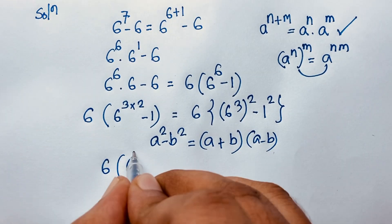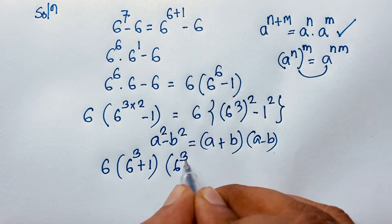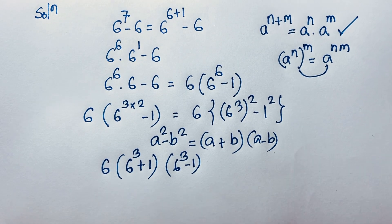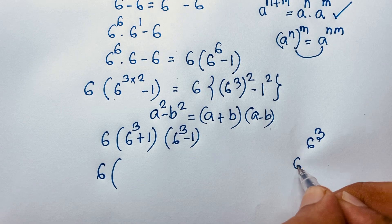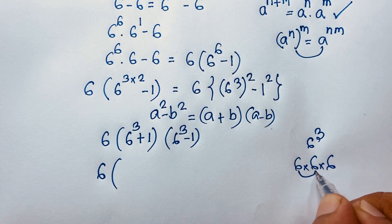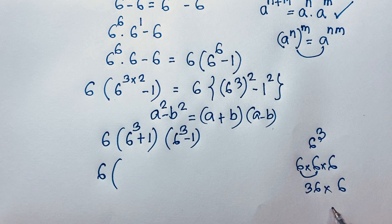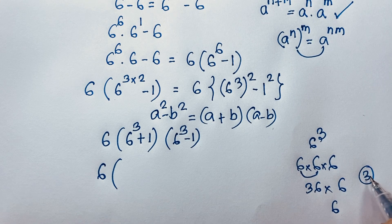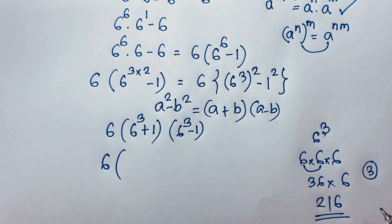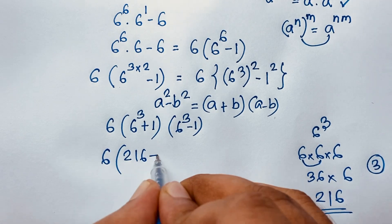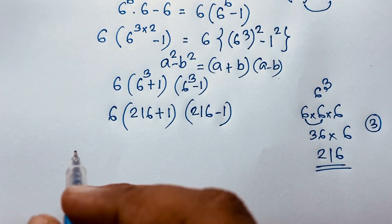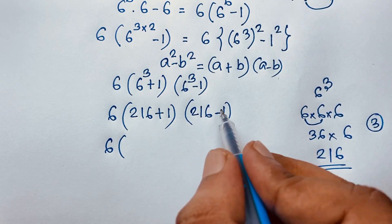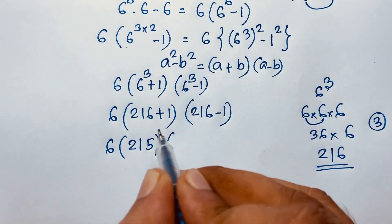Applying the difference of squares, we get 6 times (6 to the power 3 plus 1) times (6 to the power 3 minus 1). Now we calculate 6 to the power 3: 6 times 6 is 36, times 6 again — 36 times 6 gives us 216. So 6 to the power 3 equals 216. Therefore we have 6 times (216 plus 1) times (216 minus 1).